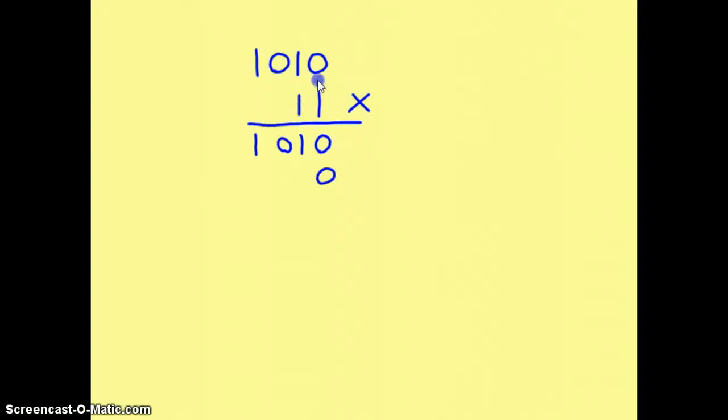Again, it's 1 multiplied by each of these, so to give us 1 times 0 is 0, 1 times 1 is 1, 1 times 0 is 0, and 1 times 1 is 1.